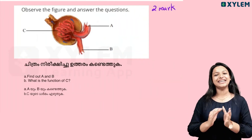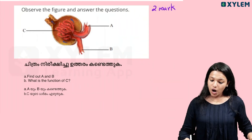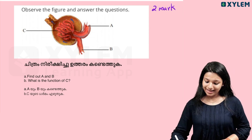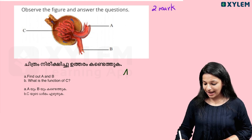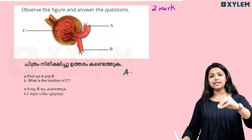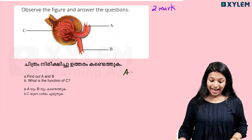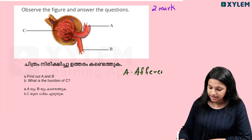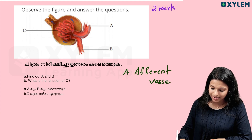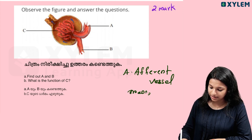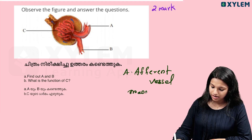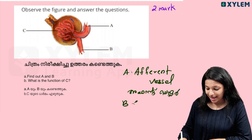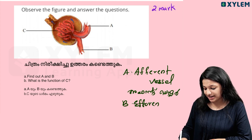Observe the figure and answer the question. Find out A and B. A is called the afferent vessel, and B is also called the afferent vessel.